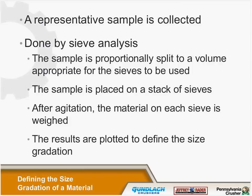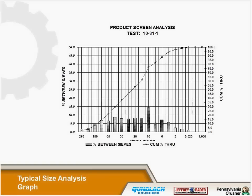The material is then put on a stack of sieves and agitated. The material held on each sieve is weighed and a graph is produced. Here is one example of a typical presentation of screen analysis data. The right-hand vertical axis shows the percent passing each sieve size — the cumulative percent passing. Across the horizontal axis are the sieve sizes, going from about an inch on the far right down to 270 mesh, coarser on the right to finer on the left. You can see it produces a whole range of sizes.